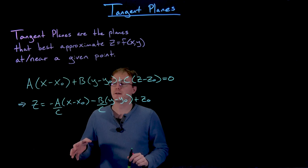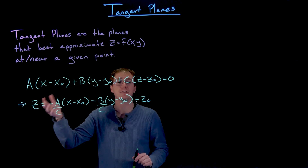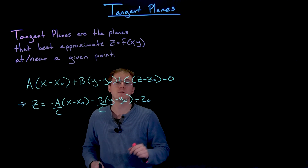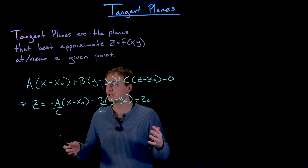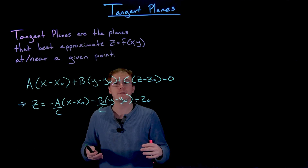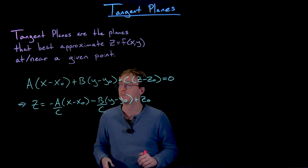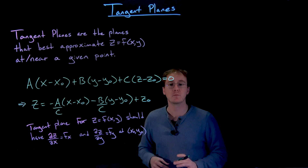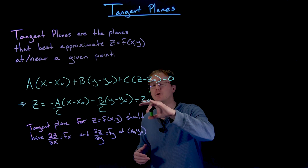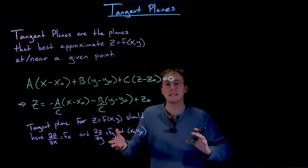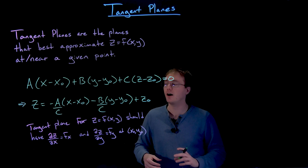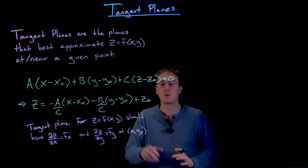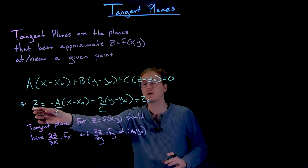We're trying to find the values of a, b, and c using partial derivatives instead of finding a normal vector. The key observation is that a tangent plane is supposed to approximate our function at the point, so it should have the same partial derivatives as our function at that point. Our tangent plane needs to have the same first partial derivatives as our function does at the point where we are creating the tangent plane. So if we take the partial derivative with respect to x of our tangent plane's equation, it should agree with the partial derivative with respect to x of our function at the point of interest.